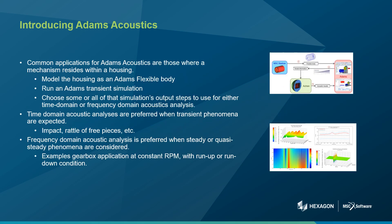Common applications for Adams acoustics are those where a mechanism resides within a housing. The housing is modeled as a flex body in Adams, and a transient Adams simulation is then executed. Some or all of the simulation output can then be used for time domain or frequency domain acoustic analysis. Time domain analysis is used when a transient phenomenon is targeted, such as impact and rattle of free pieces. Frequency domain analysis is preferred when steady or quasi-steady phenomena are considered, such as gearbox analysis at a constant RPM or with a run-up or run-down.